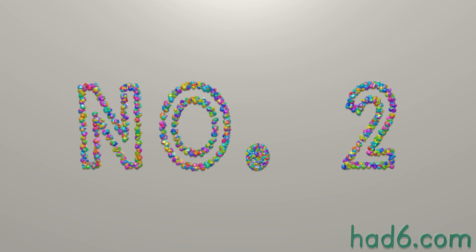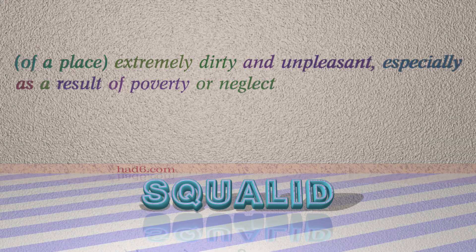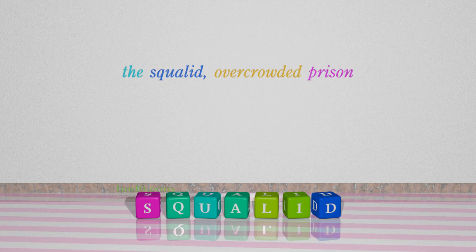Number 2: Squalid. Which means of a place, extremely dirty and unpleasant, especially as a result of poverty or neglect. For example: The squalid, overcrowded prison.